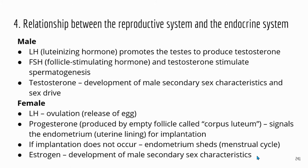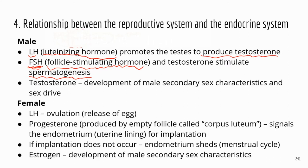Now let's look at the relationship between the reproductive system and the endocrine system. We haven't talked about the endocrine system yet, but we'll mention some terms now and go over them again later. For both sexes we have luteinizing hormone (LH) and follicle stimulating hormone (FSH). LH will promote the testes to make more testosterone — the main male sex hormone. FSH and testosterone together stimulate spermatogenesis, which simply means sperm production. Testosterone is also responsible for the development of male secondary sex characteristics during puberty and also sex drive.